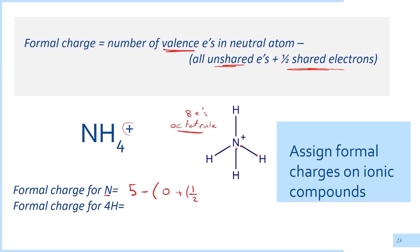Counting the shared electrons: one, two, three, four, five, six, seven, eight — there are eight shared electrons. So the formal charge for nitrogen is equal to five valence electrons minus zero unshared electrons, and half of the eight shared electrons, which equals plus one.